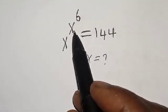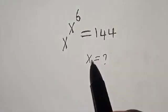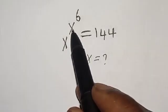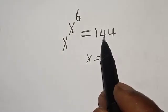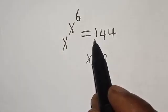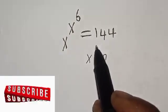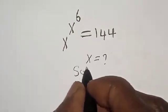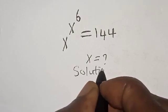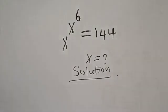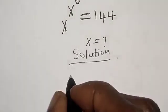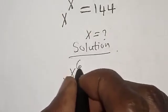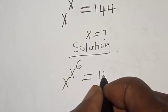Hello, welcome to Math Gist. In this class we want to find the value of s from this given equation: s raised to power s raised to power 6 is equal to 144. But before we proceed, please like, share, comment and subscribe. Thank you. Solution: the given equation is s raised to power s raised to power 6 is equal to 144.